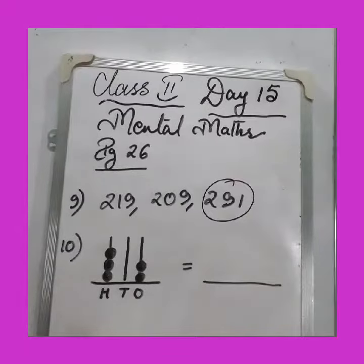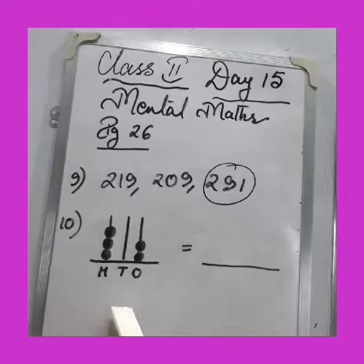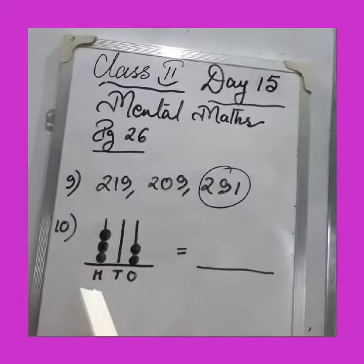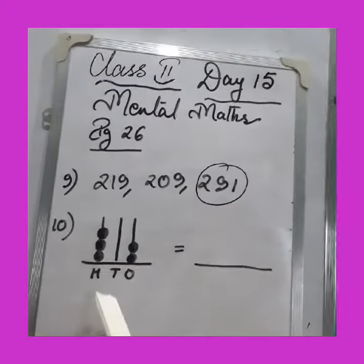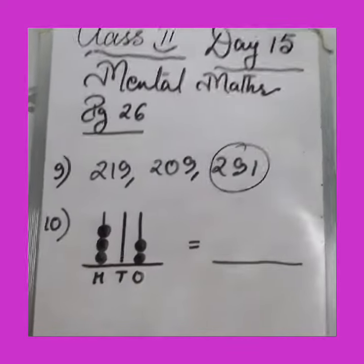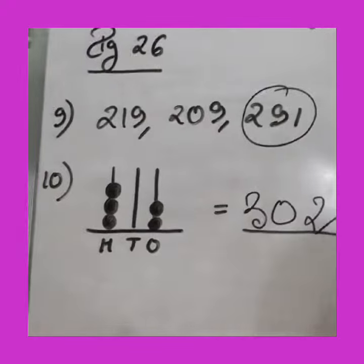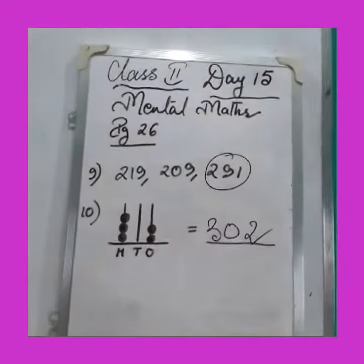Then you have to write the number. It is given here: 3 beads at hundred space, no bead at ten space, and 2 beads at one space. So what will be the answer? 302.